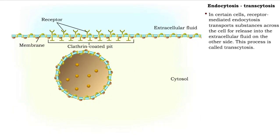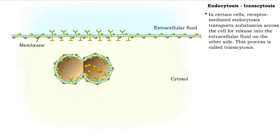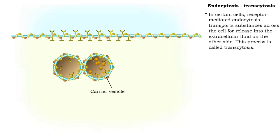Transcytosis is a process common in endothelial cells of blood vessels. In this process, the carrier vesicle transports substances from the blood across the cell, where it releases into the extracellular fluid of the interstitial fluid.